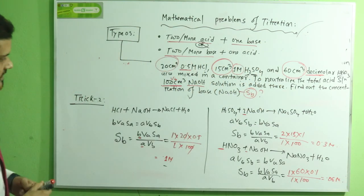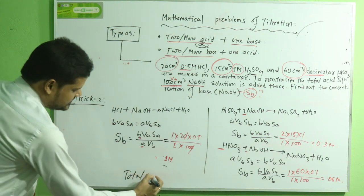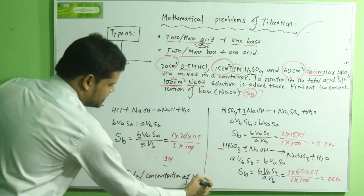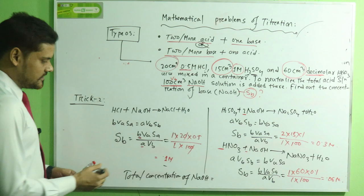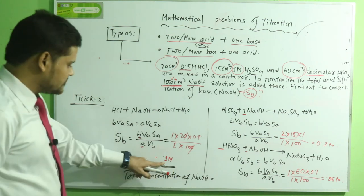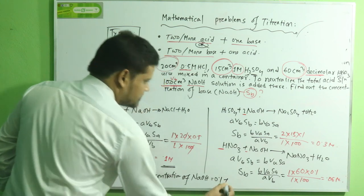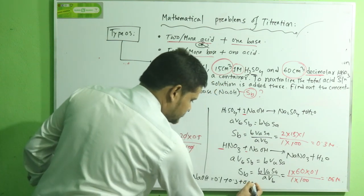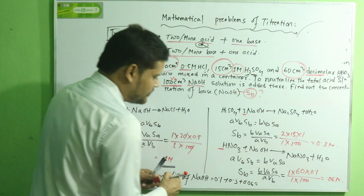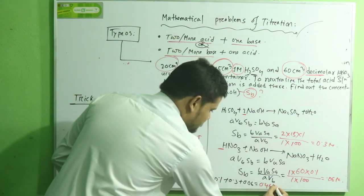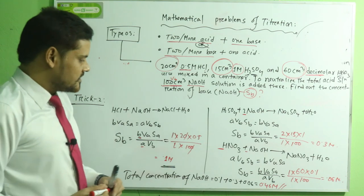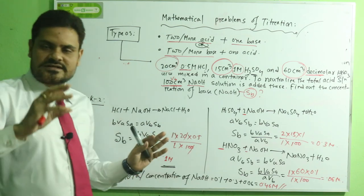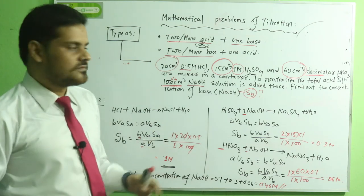The total concentration of sodium hydroxide is the sum of all three: 0.1 + 0.3 + 0.06 = 0.46 molar. Both Trick 1 and Trick 2 give the same result of 0.46 molar. By these two processes, you can easily find the molarity of the base when one substance reacts with three or more substances.